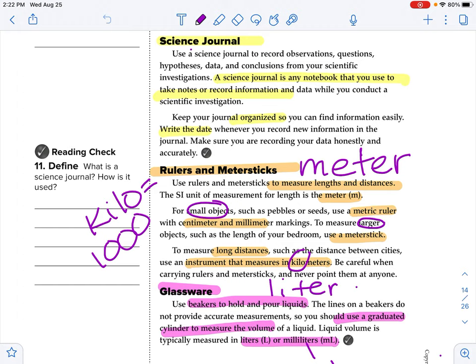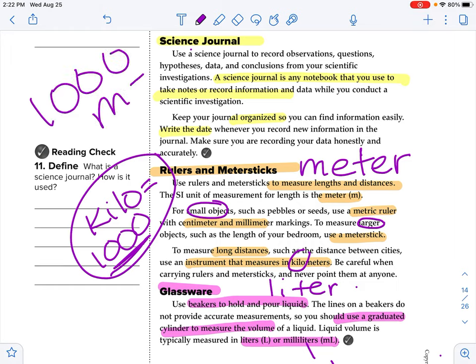For small objects such as pebbles or seeds, use a metric ruler with centimeters and millimeters markings. To measure larger objects such as the length of your bedroom, use a meter stick. So a meter stick is just a little bit longer than three feet. Okay, so a little bit longer than a yard, like 39 inches, whereas a yard is 36 inches, just for reference there. It's important for you to know the prefix kilo means a thousand. So you've heard the term kilometers, right? Kilometers, how many kilometers is that? That's 10 kilometers. So that would be a thousand meters is one kilometer. So 1,000 meters equals one kilometer.